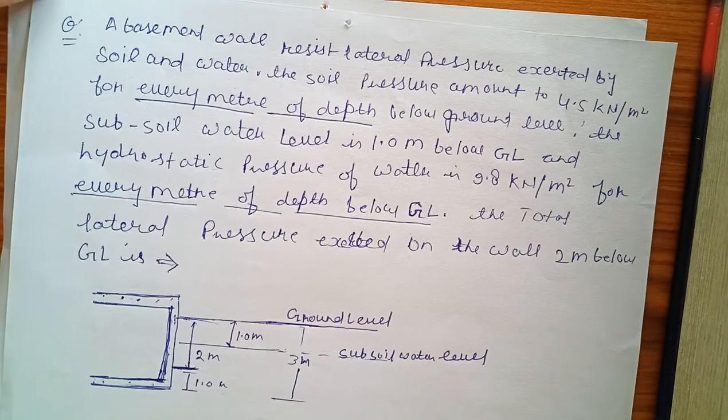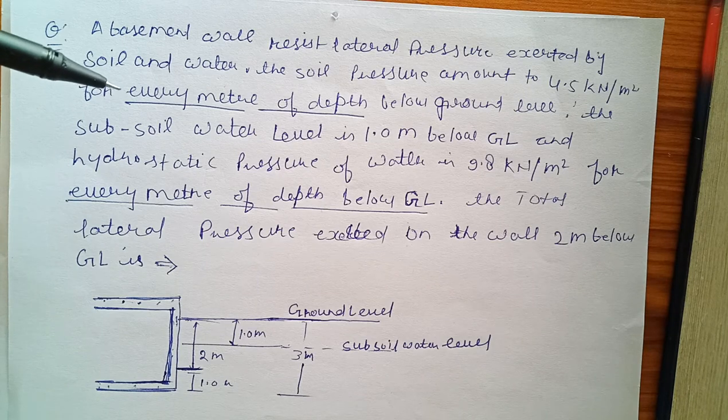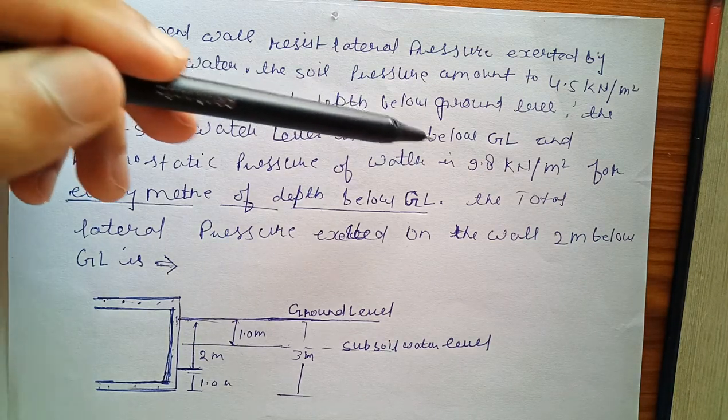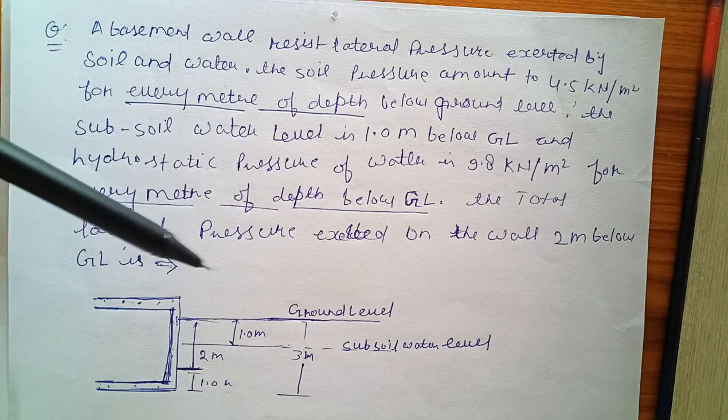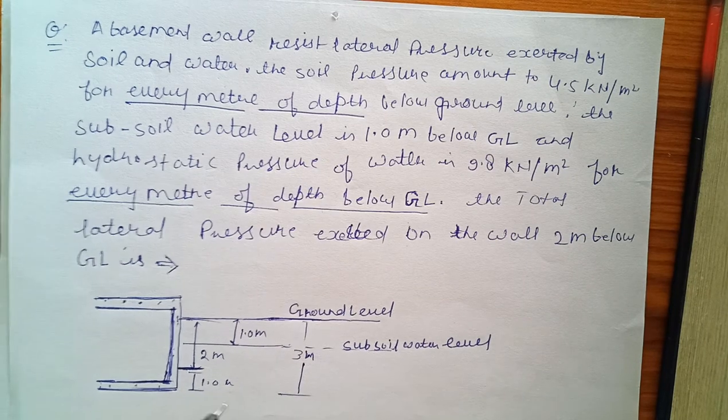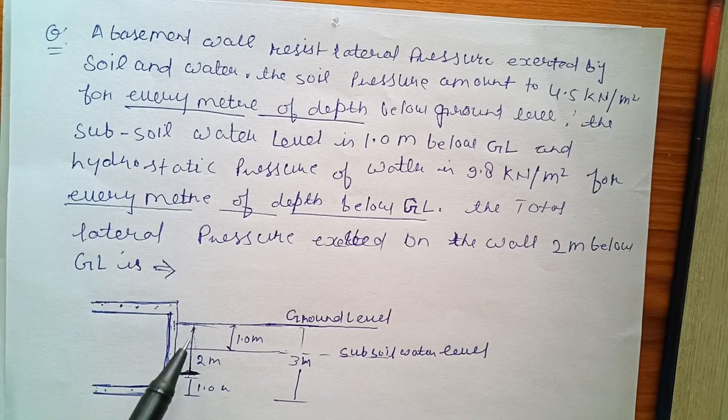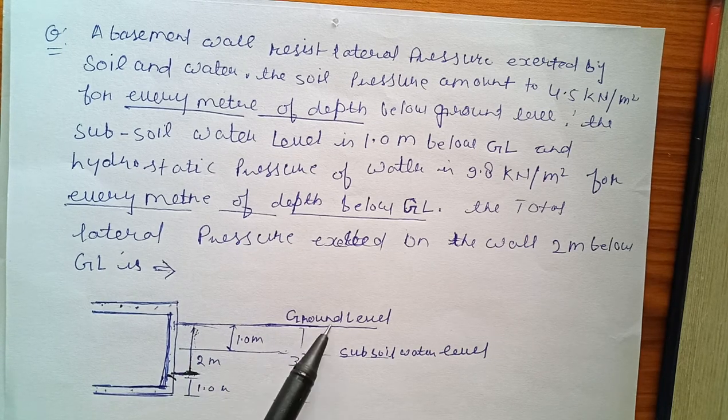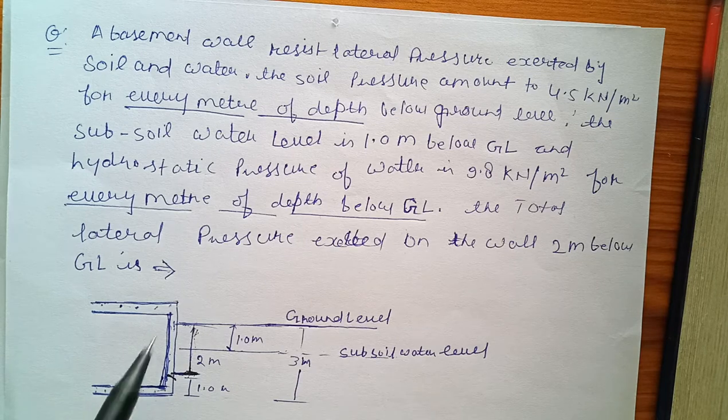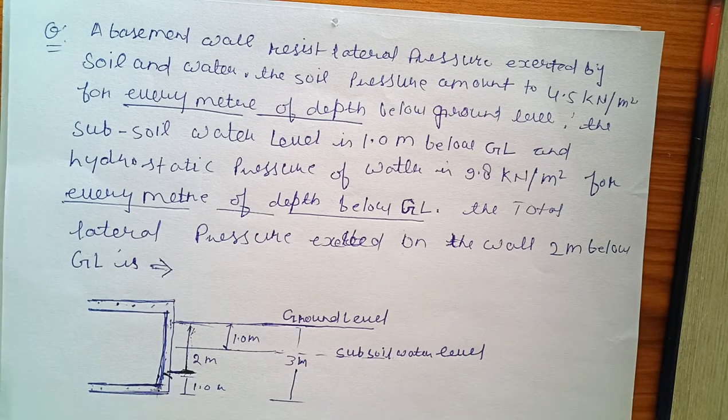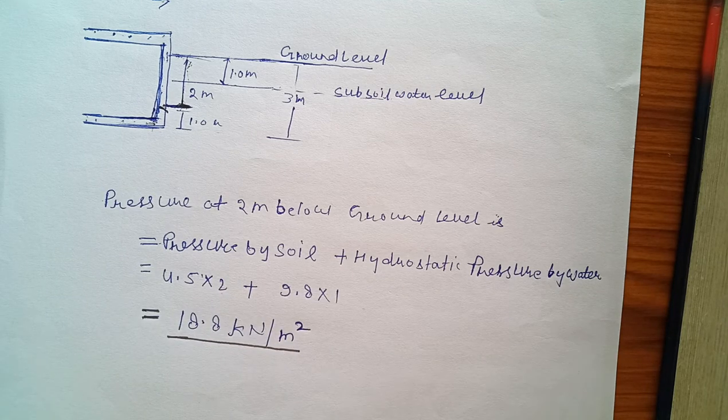Another question: a basement wall resists lateral pressure exerted by soil and water. The soil pressure amounts to this kilonewton per square meter for every meter of depth below ground level. The subsoil water level is one meter below ground level, and hydrostatic pressure of water is this. The total lateral pressure exerted on the wall two meters below ground level: ground level, then one meter level is subsoil water level start, then three meters total is this retaining wall's depth.